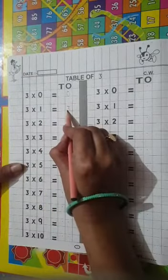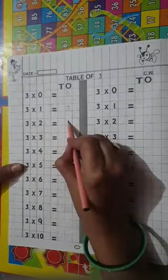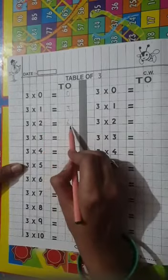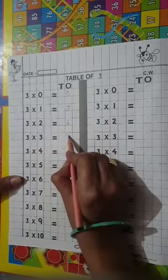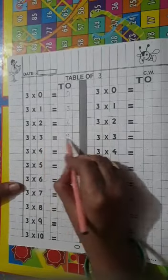3 2s are 6, 3 2s are 6. 3 3s are 9, 3 3s are 9.